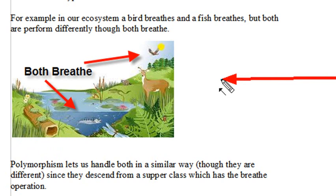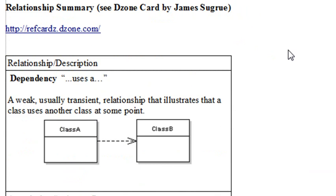So polymorphism lets us handle both in a similar way, though they are different, since they descend from a superclass, which has the breath operation. So let's summarize the relationships that you'll find in UML. And this comes from refcard.dzone.com. And one is a simple dependency.